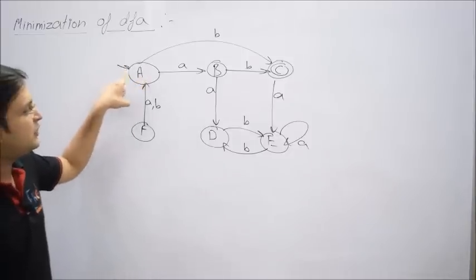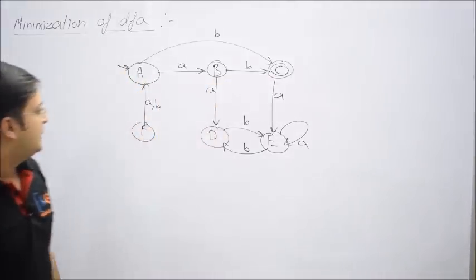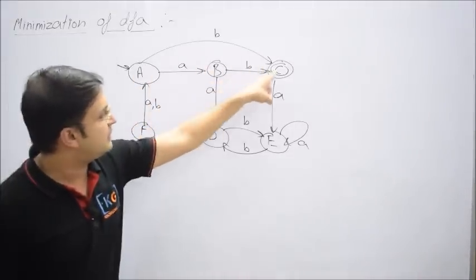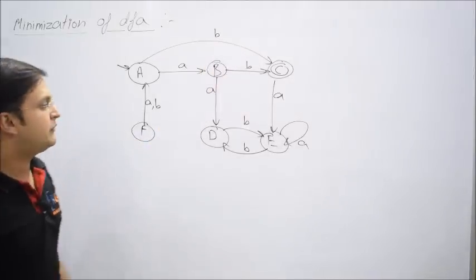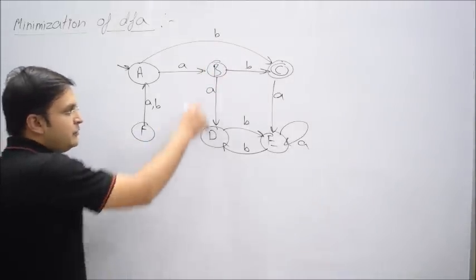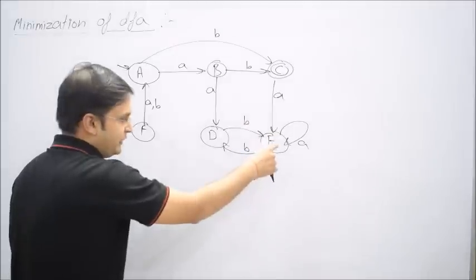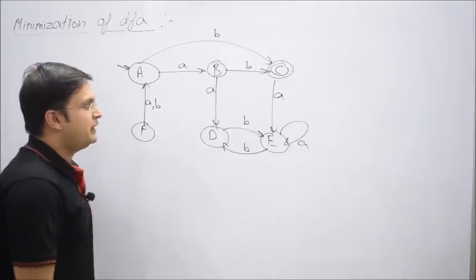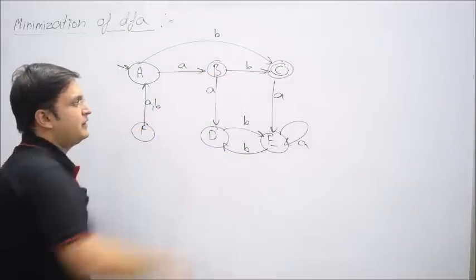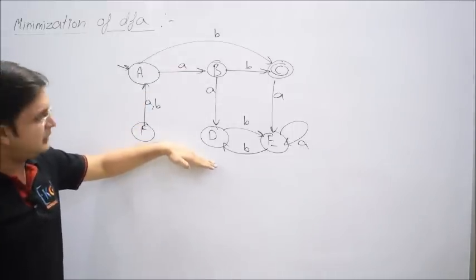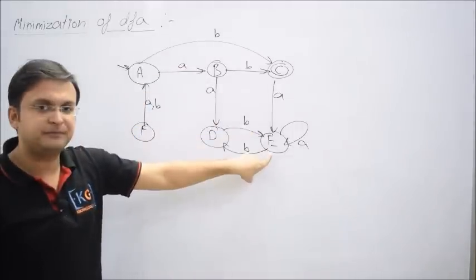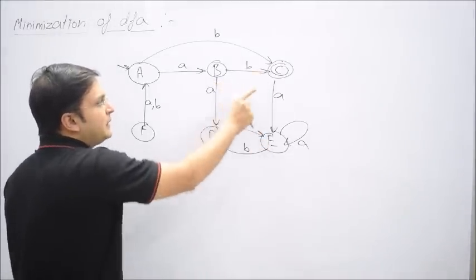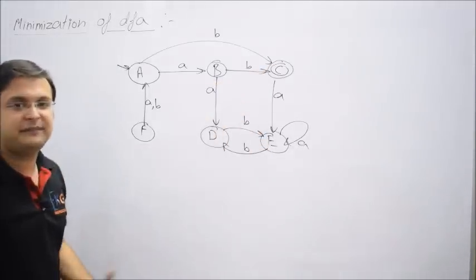Is A a dead state? No, for sure there is a path to reach the final state. F is a dead state? No, there's a path to reach the final state. B can reach the final state. C is already a final state. What about D? Once you reach D, you can go to E and come back from E to D, but there's no way to reach back to the final state C.